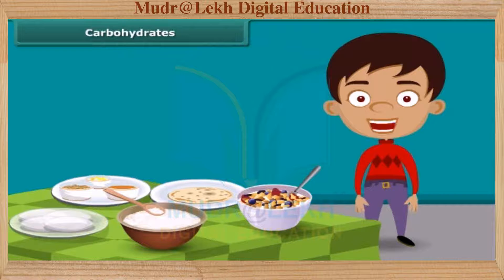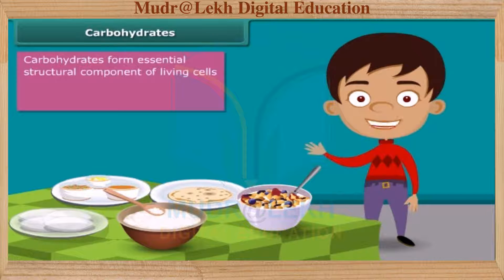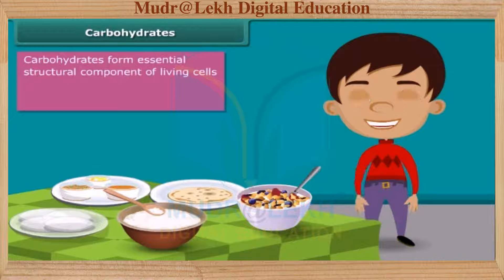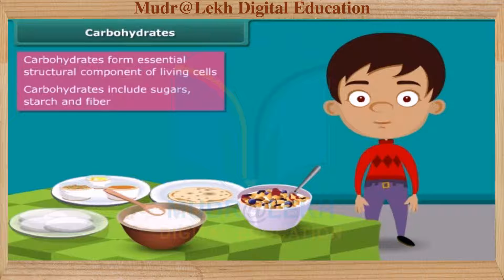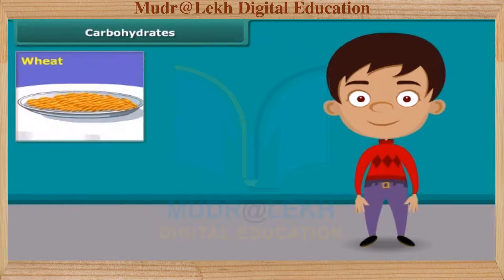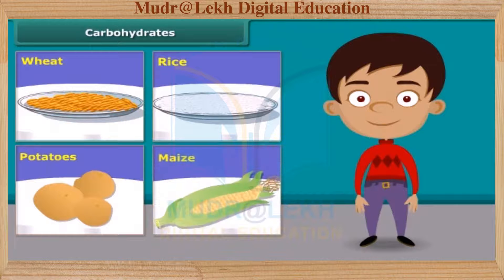First, carbohydrates. Carbohydrates form an essential structural component of living cells. They are the main source of energy for animals. Carbohydrates include sugars, starch, fiber, etc. They are mainly found in wheat, rice, potatoes, corn and maize.